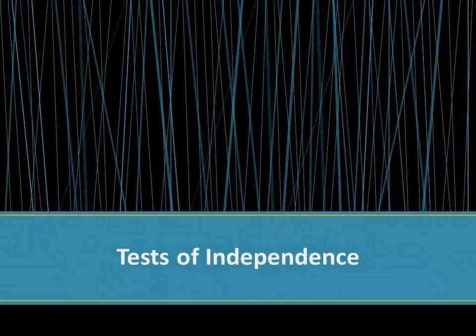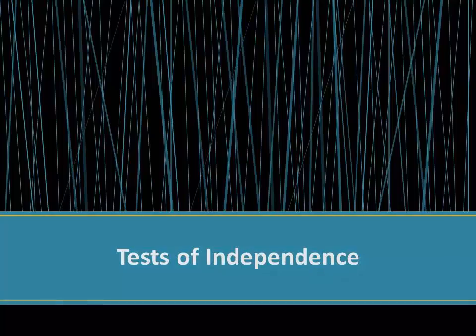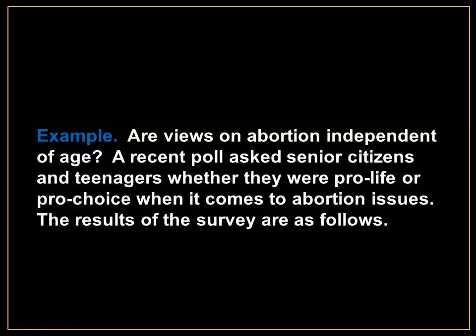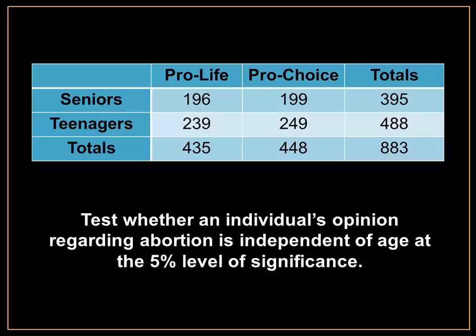Performing a test of independence. For example, are views on abortion independent of age? A recent poll asked senior citizens and teenagers whether they were pro-life or pro-choice when it comes to abortion issues. The results of the survey are as follows. Test whether an individual's opinion regarding abortion is independent of age at the 5% level of significance.